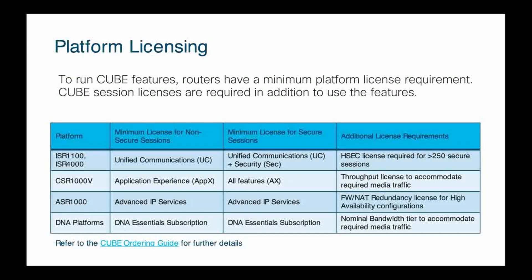When do you use which license? Typically you're going to know your application — will you require SIP TLS or something of the sort? If you do, you definitely need the secure option. If you're connecting to a more legacy or traditional PSTN provider that gives you a private circuit, there are really no major security concerns around encryption, so you'll use the non-secure category. Likewise, if you're connecting two IP PBXs together — maybe Avaya and Cisco on-premise — you may be looking at the non-secure type. If you're in a highly secure environment, you're probably going to be looking at encryption. If you're using Microsoft Teams doing direct routing, Teams does require TLS encryption when connecting to their service, so you definitely need the secure session license for anything with direct routing.